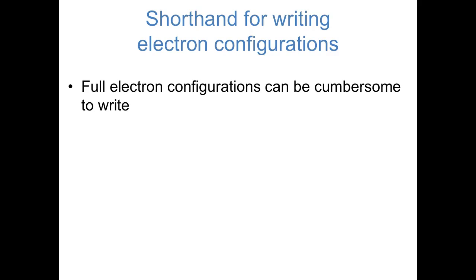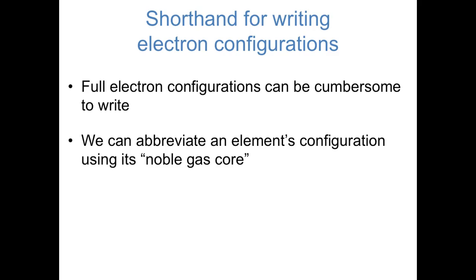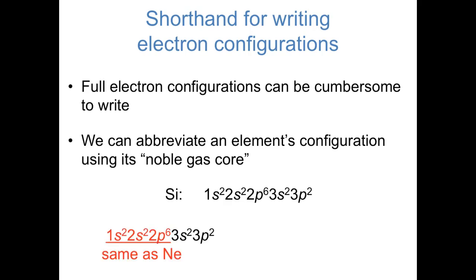When an element has a large number of electrons, the full electron configuration can be cumbersome to write, so it's possible to abbreviate using its noble gas core. For example, a ground-state silicon atom has electrons in the 1s, 2s, 2p, 3s, and 3p orbitals. But as chemists, we know the core electrons with n equals 1 and 2 aren't really doing much — those orbitals don't get involved in bonding. It's mainly the valence electrons in 3s and 3p that matter. So we write silicon's configuration as a neon core with 3s2, 3p2.